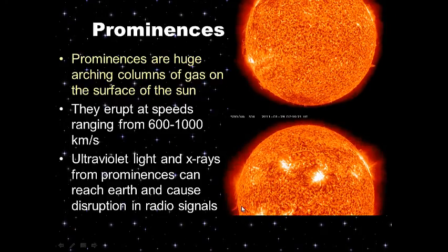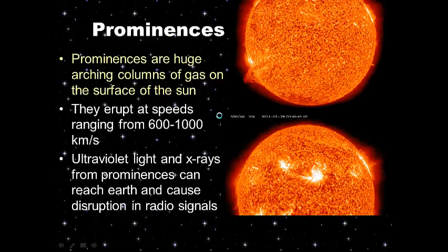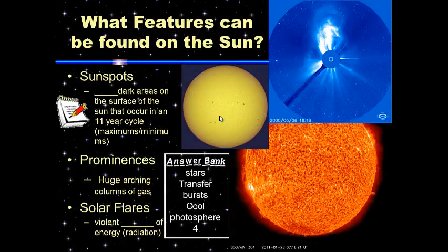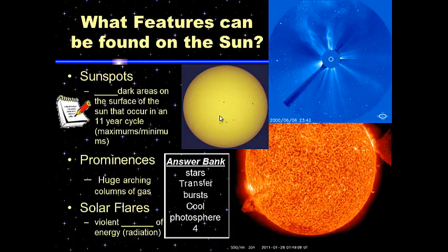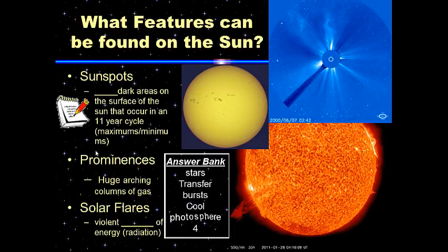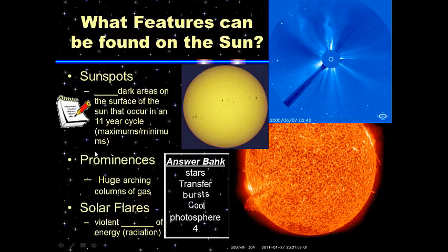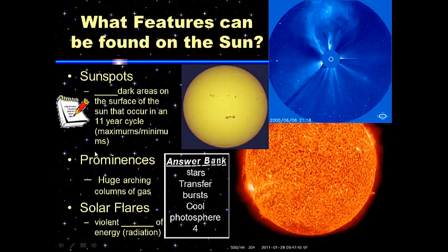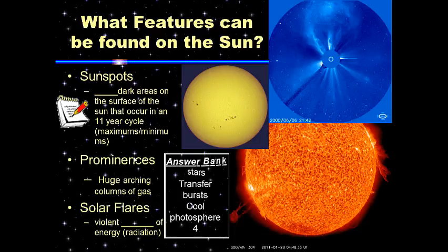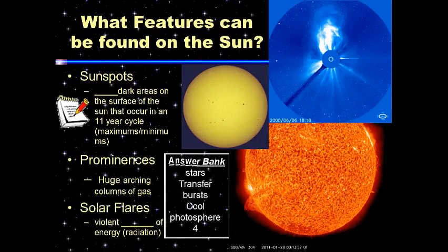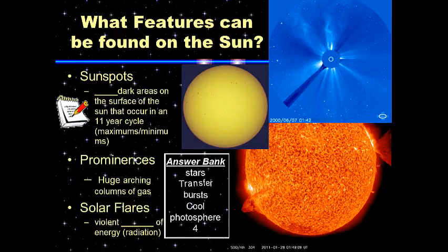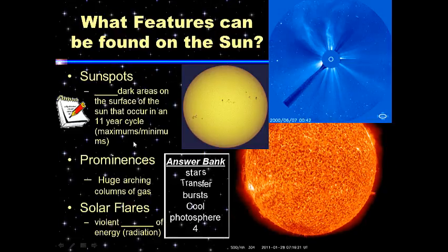Write down the question 'What features can be found on the Sun?' Read the passage and determine which words best complete the sentences using the answer bank. By now you should have all six answer bank words filled out. Go ahead and pause this while you write.